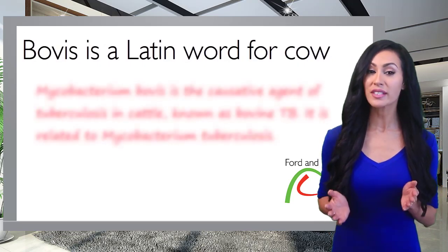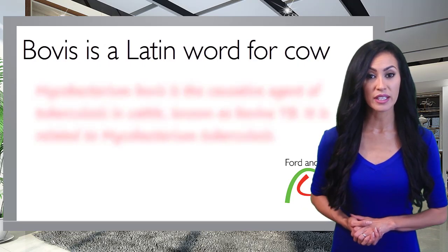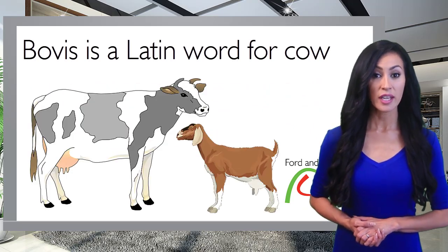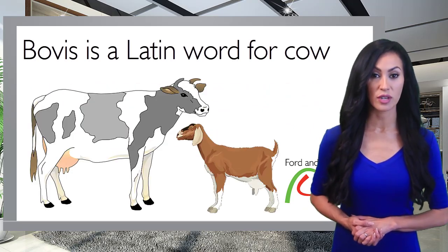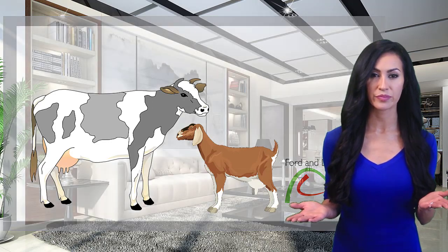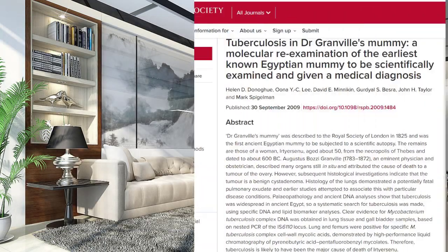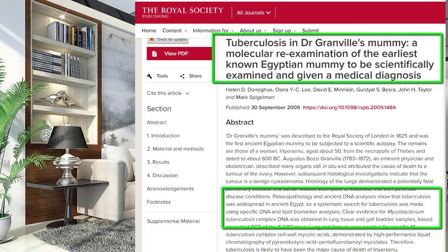The global, staggering impact of the disease is well documented. It is believed that the domestication of cattle initiated the transmission of the pathogen from animals to humans. Research indicates that the disease existed in the Egyptian population some 3,000 to 5,000 years ago. Forensic analysis of tissues taken from Egyptian mummies revealed signs of tuberculosis.